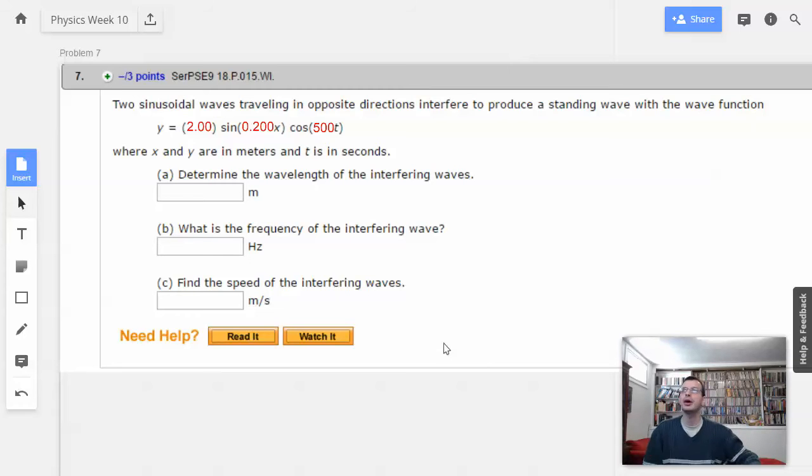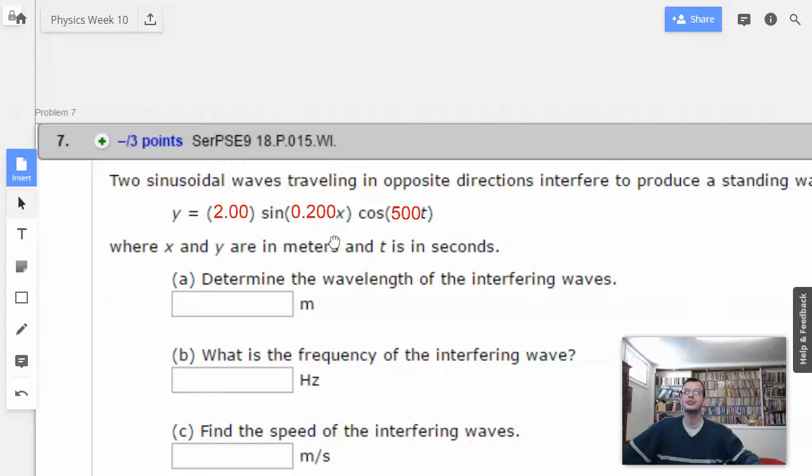Week 10, problem 7. Two sinusoidal waves traveling in opposite directions interfere to produce a standing wave with the wave function. That is not a format I am used to, but I'm pretty sure we can figure this out.